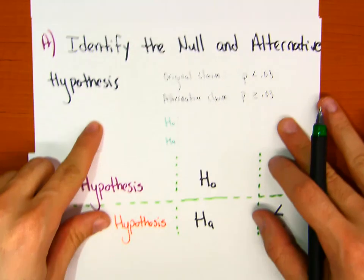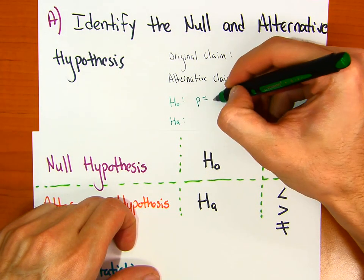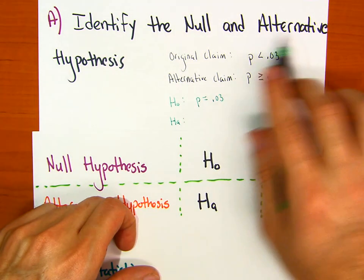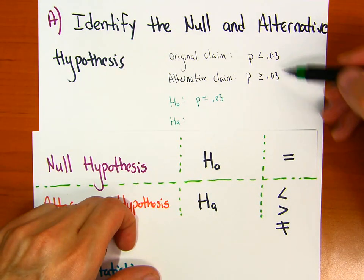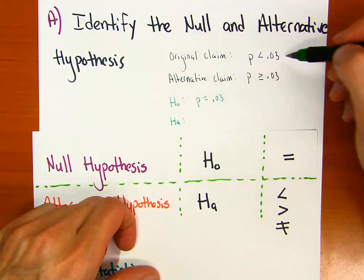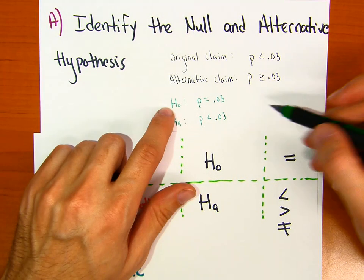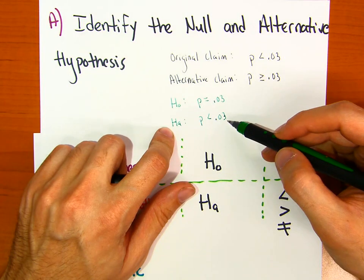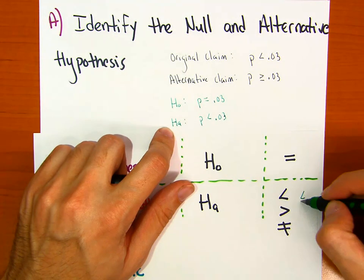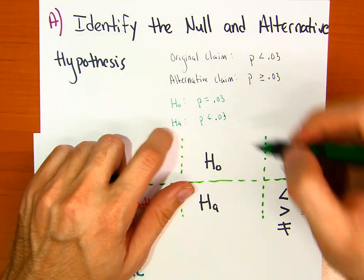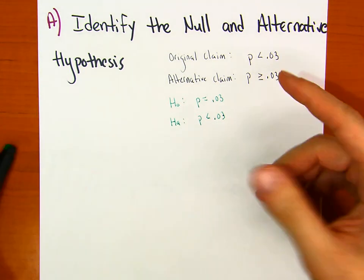H-naught will always have an equal sign, so H₀ is p equals 0.03. The alternative hypothesis must have either less than, greater than, or not-equals. The original claim here has less than, so the alternative is p is less than 0.03. Your H-sub-a will never have less-than-or-equal-to or greater-than-or-equal-to — it will always be one of those three strict symbols. This will be important for determining which type of test to use later.